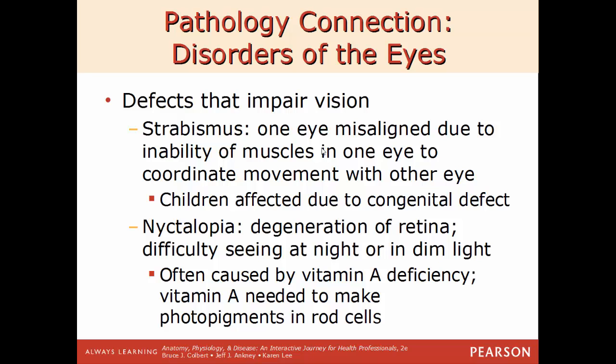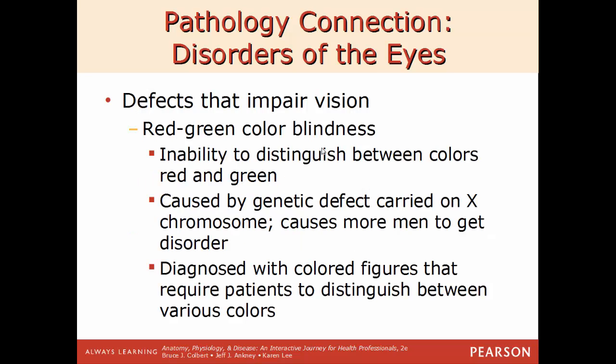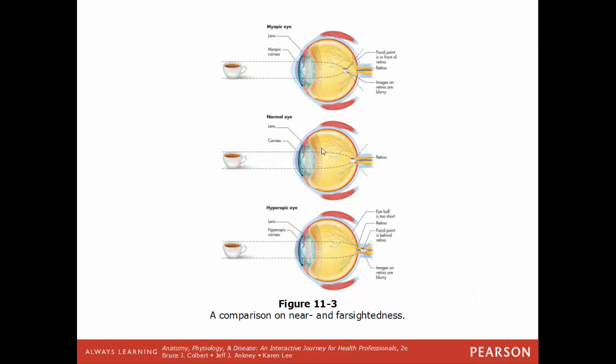Nyctalopia is a degeneration of the retina causing difficulty seeing in dim light or at nighttime, often caused by a deficiency in vitamin A, which is needed to make photopigments in the rod cells of the retina. Corrective vision options include eyeglasses, contact lenses, RK surgery (radial keratotomy), and LASIK surgery. Red-green color blindness is the inability to distinguish between red and green, due to a genetic defect on one of the X chromosomes — which is why more men get it than women, as it is passed on from mother to sons. It is diagnosed using colored figures like the Ishihara plates.